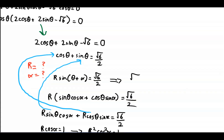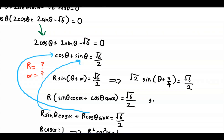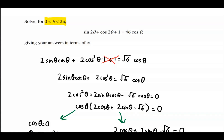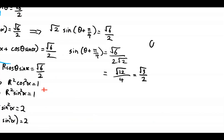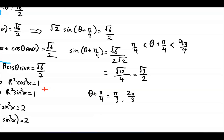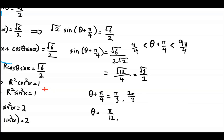So this gives us root 2 sine of theta plus pi by 4 equal to root 6 over 2, or sine of theta plus pi by 4 equal to root 6 over 2 root 2. Rationalizing the denominator, we get root 12 over 4, or root 3 over 2. Since theta is between 0 and 2 pi, theta plus pi by 4 is between pi by 4 and 9 pi by 4. We find all values of theta plus pi by 4 in that range where sine equals root 3 over 2, giving pi by 3 and 2 pi by 3. Subtracting pi by 4 from both sides, theta equals pi by 12 and 5 pi by 12.